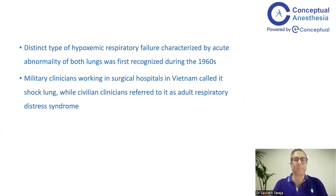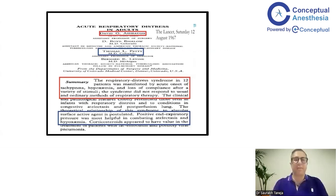The initial Lancet paper described an acute abnormality involving both lungs with hypoxemic respiratory failure. The common features remain the same: acute onset of tachypnea, hypoxemia, decreased compliance, and a syndrome that did not respond to usual methods of therapy — a sicker subset of patients. Positive end-expiratory pressure was most helpful in combating atelectasis and hypoxemia, so even in the 1960s they were treating these patients with PEEP to improve oxygenation.